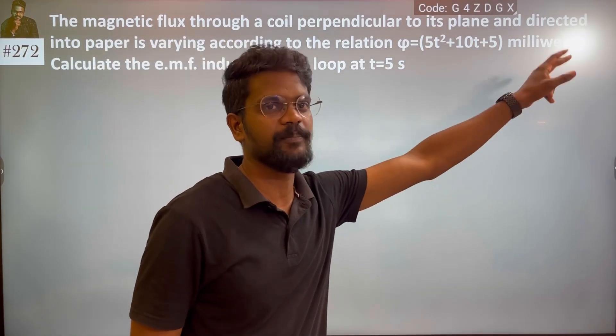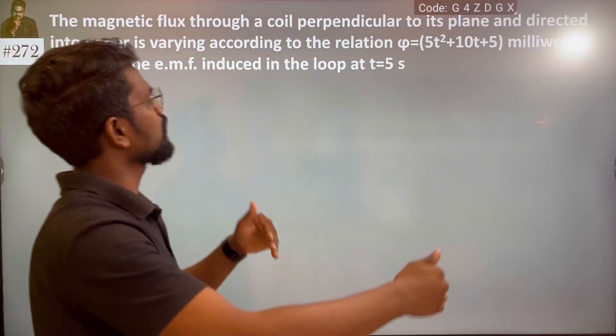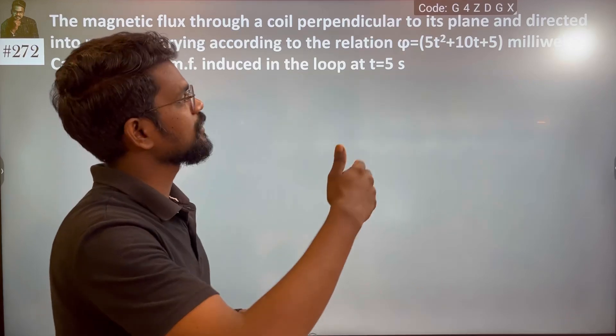Milliweber, 10 to the power minus 3 weber. I repeat, the magnetic flux through a coil perpendicular to its plane,